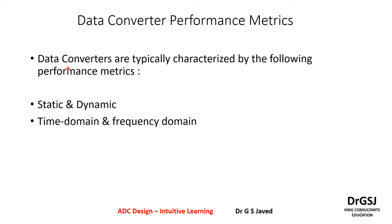The method to determine the performance of a data converter is through certain performance metrics. Data converters are typically characterized by the following performance metrics: static and dynamic. Under dynamic, we have time domain and frequency domain. Let us look at both these details further.